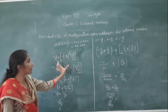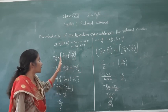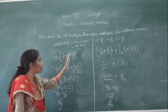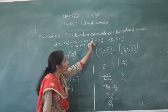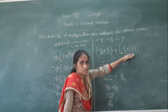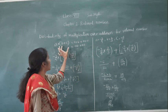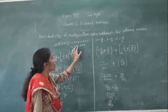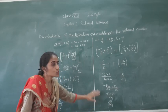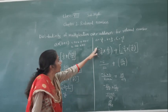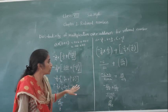So what we can write: minus 3 upon 4 into bracket 2 upon 3 plus minus 5 upon 6 is equal to ab plus ac. Both sides equal 1 upon 8. So a into bracket b plus c is equal to ab plus ac. Both of them are equal.